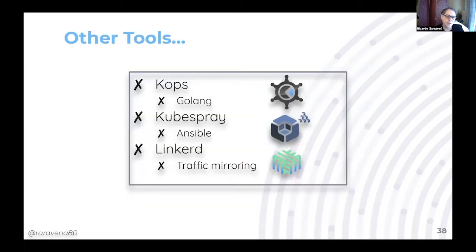Other popular tools for deploying clusters that support blue and green approaches: KOPS deploys Kubernetes clusters across cloud providers, is written in Go, and supports Google Cloud, AWS, and Azure — great for managing clusters across multiple clouds and creating blue and green clusters for upgrades. Kubespray is similar but written in Ansible. Linkerd allows more seamless traffic switchover by making Kubernetes think a service is on the local cluster when it's actually on a remote one.